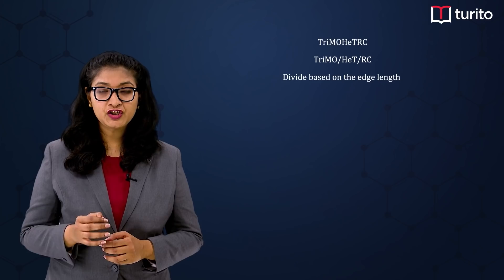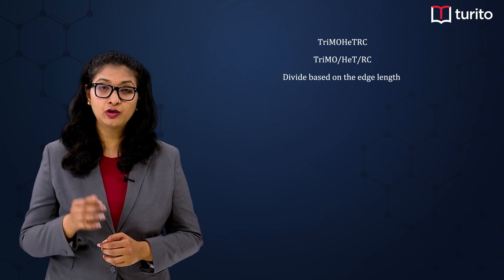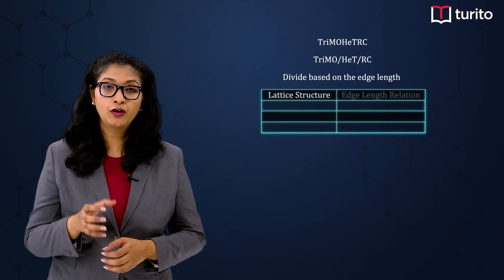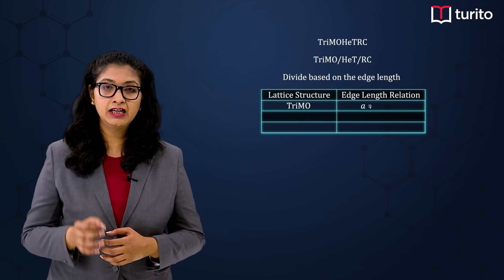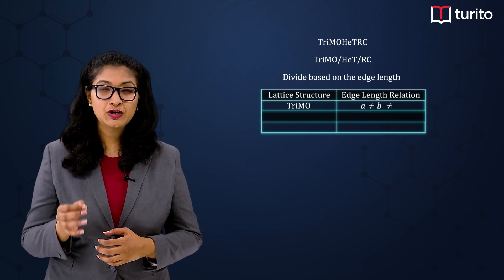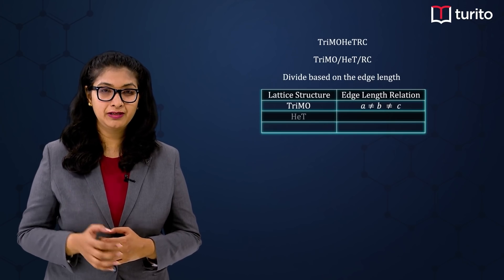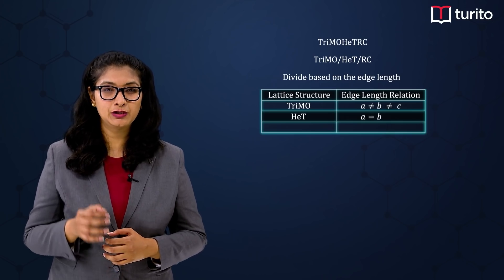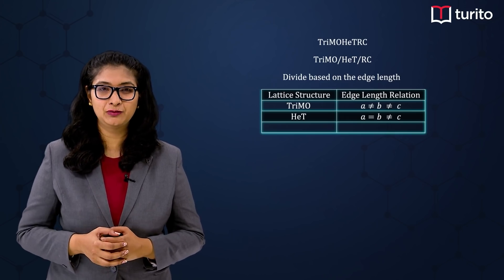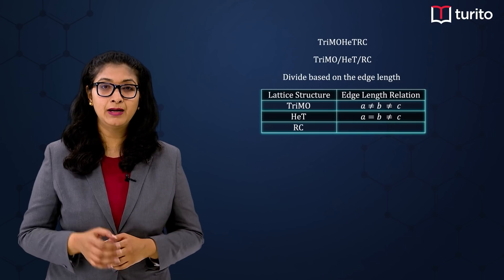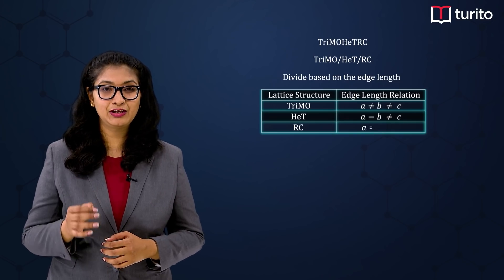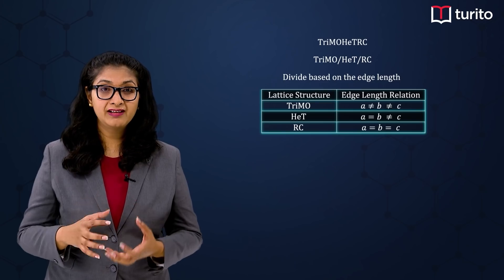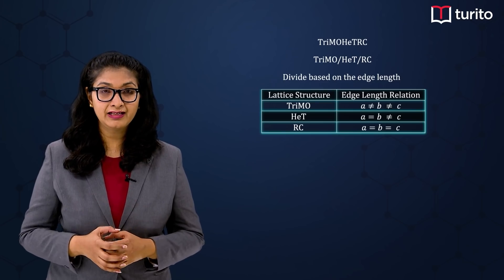This division is based on edge length. For the first part, a is not equal to b, not equal to c. For the second part, a is equal to b but not equal to c. And for the last part, a is equal to b which is equal to c.